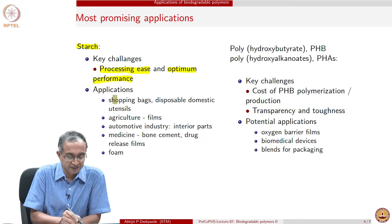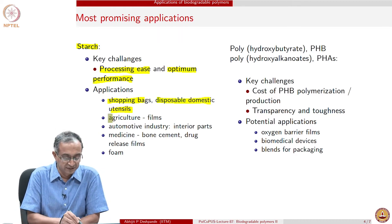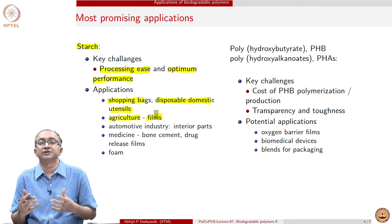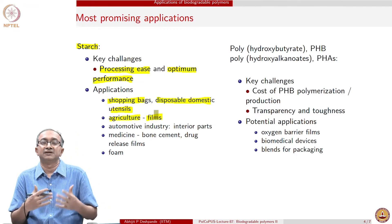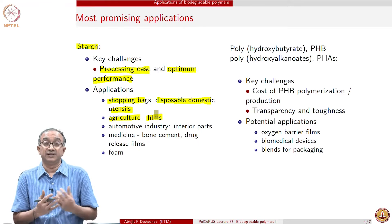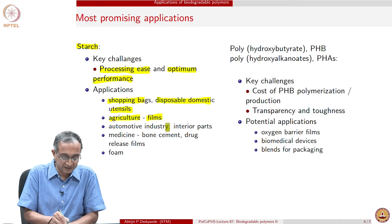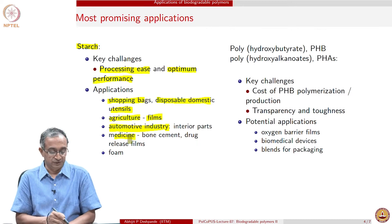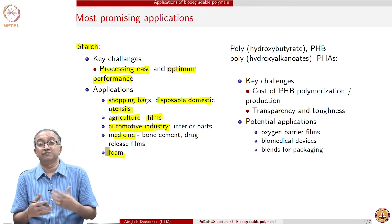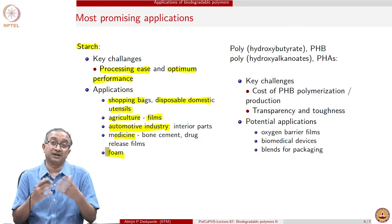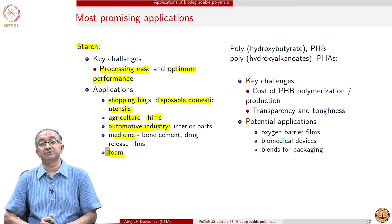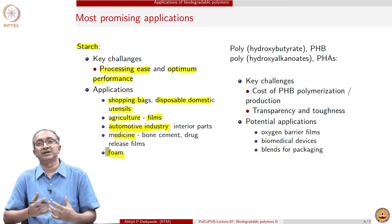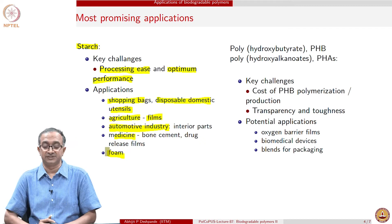We have seen that starch-based shopping bags are available, along with domestic utensils in the market. In agriculture, mulch films are used to manage the environment for plant growth, and starch-based materials are used there as well. Even in the automotive sector, interior parts use starch-based materials. In medicine, starch-based foam can replace styrofoam, which is a large component of plastic waste management issues, and this is already being done to a limited extent.